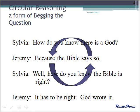Circular reasoning, which is a form of begging the question, is another fallacy. Circular reasoning assumes a proposition to be proved is already proven in the premise. In this example, Sylvia wants reassurance that God exists. Jeremy points to the Bible. When Sylvia wants reassurance that the Bible is accurate, Jeremy points to God — a God he has not yet proven exists except by pointing to the Bible. This circle can go on and on.